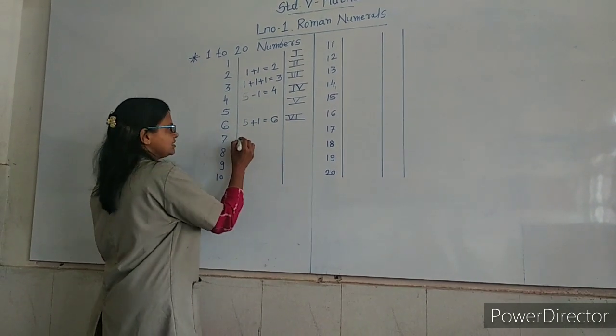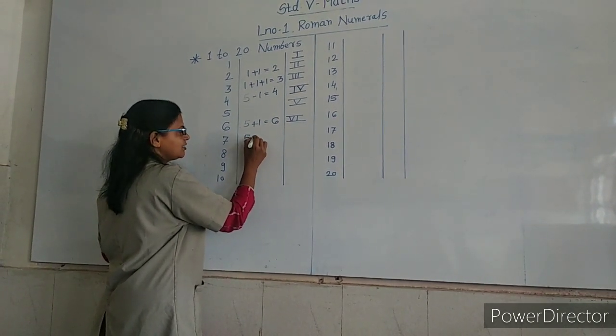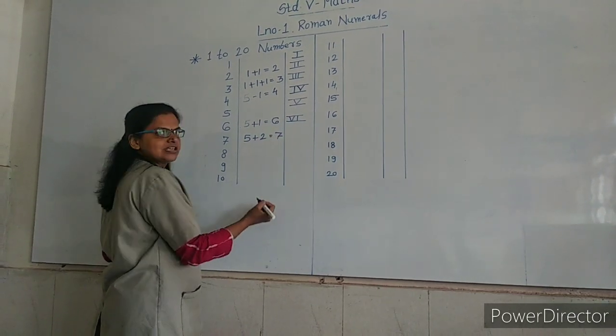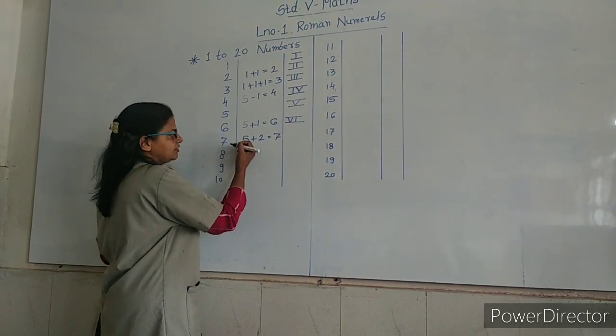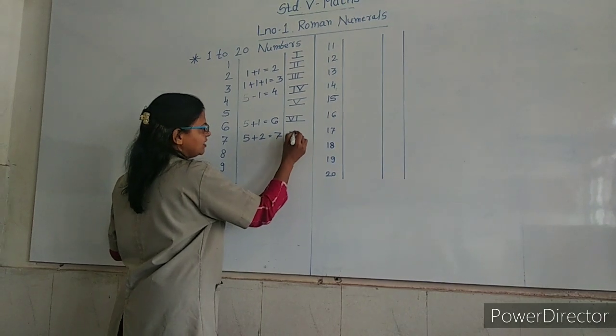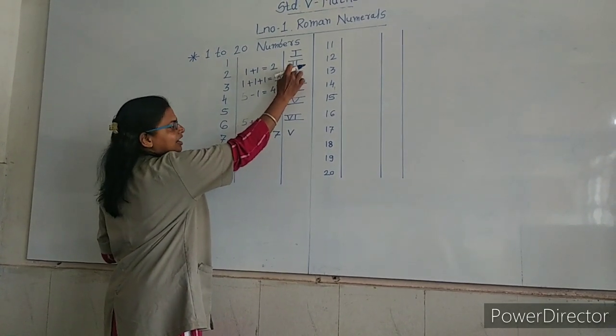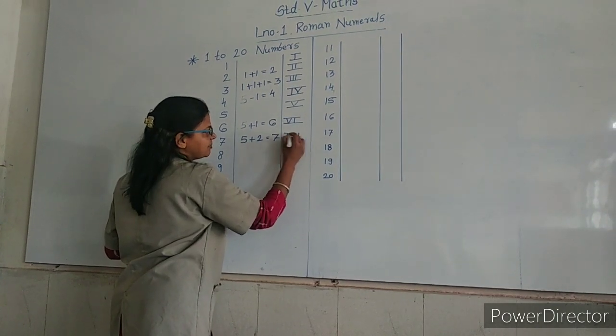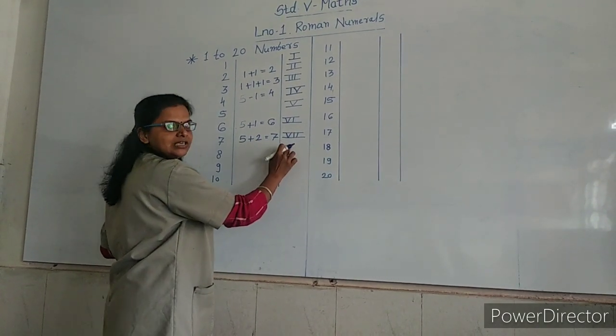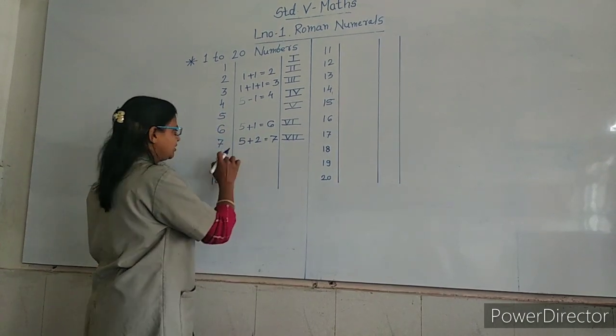7: 5 plus 2 is equal to 7. 5 is V, 2 is double I. So, V double I. 7 is VII.